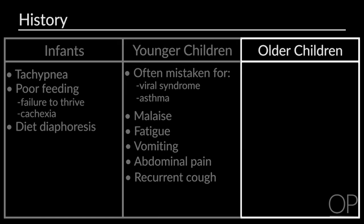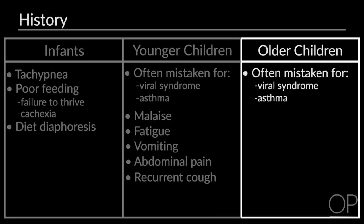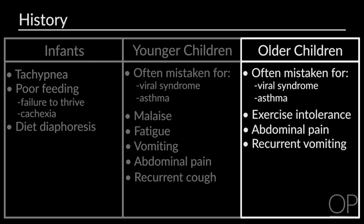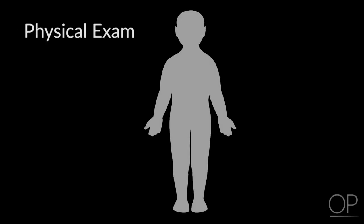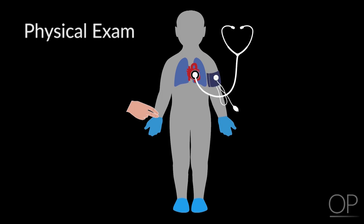In older children, many symptoms of heart failure can again be mistaken for viral symptoms or asthma. They usually present with exercise intolerance, abdominal pain, recurrent vomiting, wheezing, cough, edema, and palpitations. The physical exam is also a very important aspect of identifying heart failure and staging its severity. Signs can include tachycardia, tachypnea, diminished pulses with cool mottled extremities, and hypotension. On cardiac auscultation, you may also hear an S3, otherwise known as a gallop, which is secondary to volume and pressure overload.